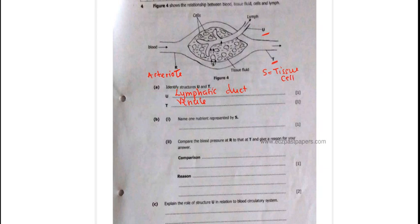We go to question 4B which says, 4B1 which says, name one nutrient represented by S. Where is S? S, which is a tissue cell. When the blood is flowing, the blood carries, one of the ingredients blood carries is glucose.